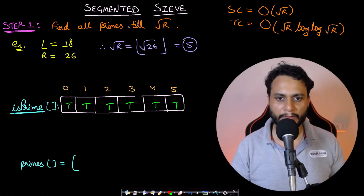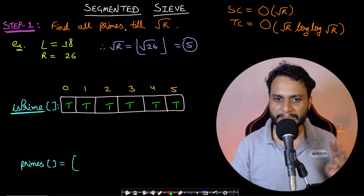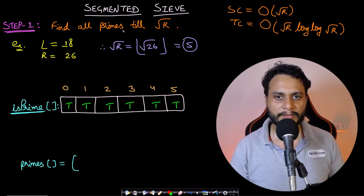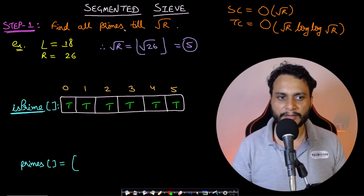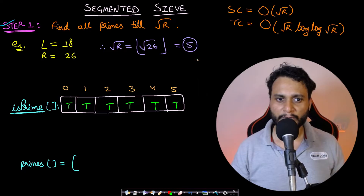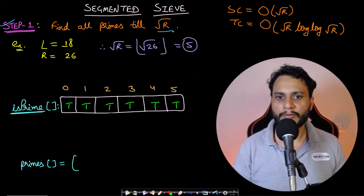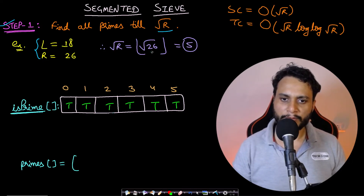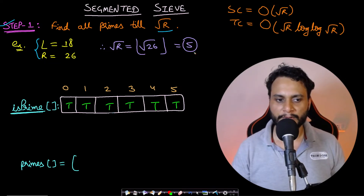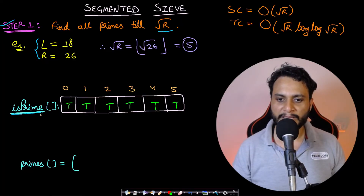Now let's look at the segmented sieve. It consists of four steps. Step one: find all the primes till square root of R. In our example, L equals 18 and R equals 26, so square root of R equals square root of 26, which is 5. Using the sieve of Eratosthenes, we initialize a boolean array 'isPrime' of size square root of R plus 1, with all values true by default.